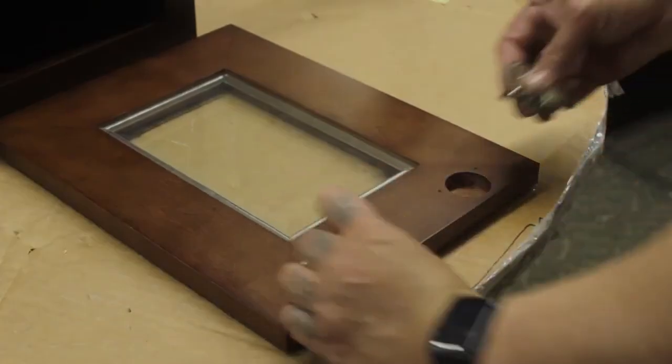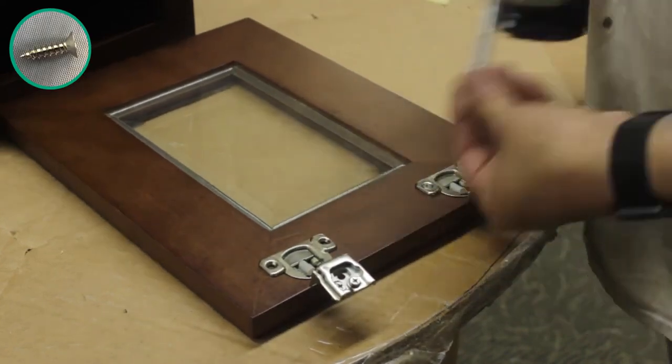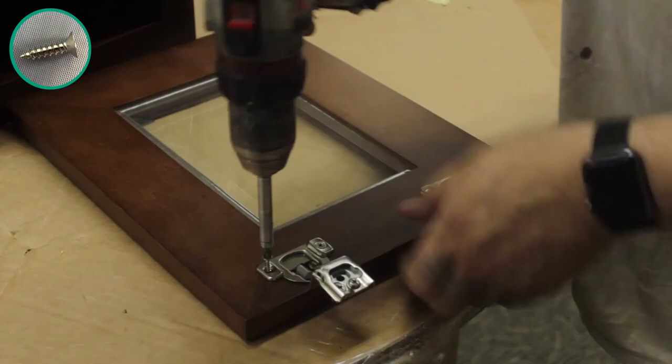Place the door face down and set each hinge into place, making sure the holes on the hinge line up with the holes on the door. Fasten them down with two screws each.